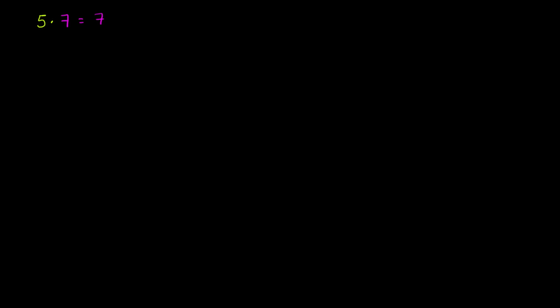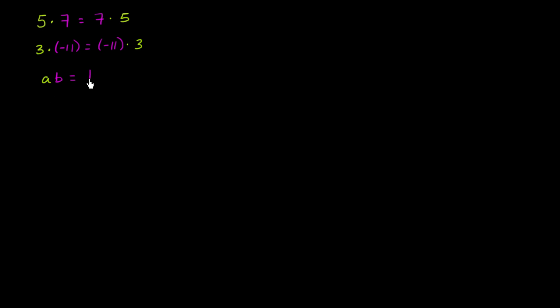We know that the multiplication of scalar quantities is commutative. For example, 5 times 7 is the same thing as 7 times 5. 3 times negative 11 is the same thing as negative 11 times 3. The whole point of commutativity is that it doesn't matter what order you're multiplying in. In general terms, if I have scalar a multiplied by scalar b, that's going to be the same thing as scalar b times scalar a.